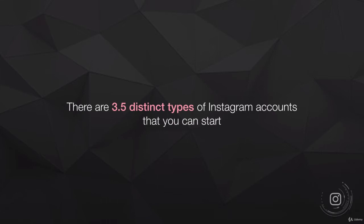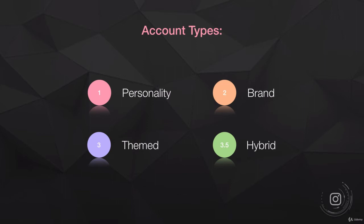There are three and a half distinct types of Instagram accounts you can start. I say three and a half because the half is a little hack we can use to get the best out of more than one account type and use it to our advantage. The three and a half account types are: one, a personality account; two, a brand or business account; three, a themed account; and 3.5, the hybrid account.